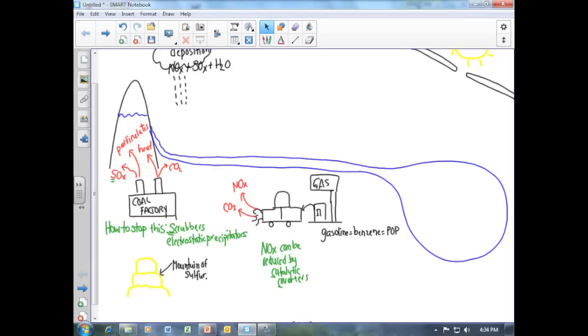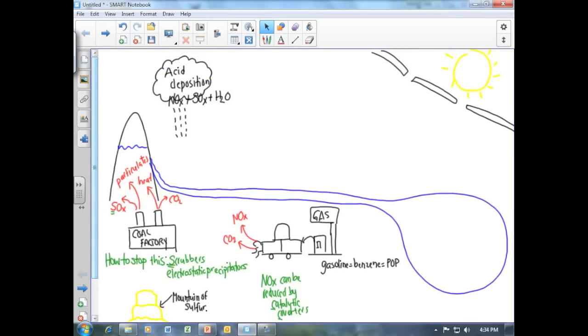Now that we have looked at the sources of nitrogen and sulfur oxides, we will now look at the effects of acid deposition. One of the major effects of acid deposition is that it can cause the leaching of heavy metals.